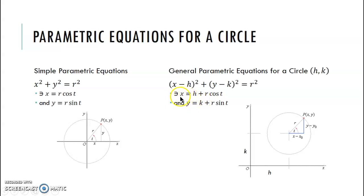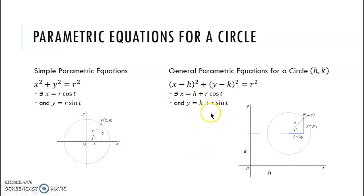How does this change the parametric equations? Very slightly — instead of just r·cos(t), now you have x = h + r·cos(t), and y = k + r·sin(t). Remember that h goes with x and k goes with y. If you're given the rectangular equation of your circle, all you need is the center (h and k) and the radius, and you can write your parametric equations.